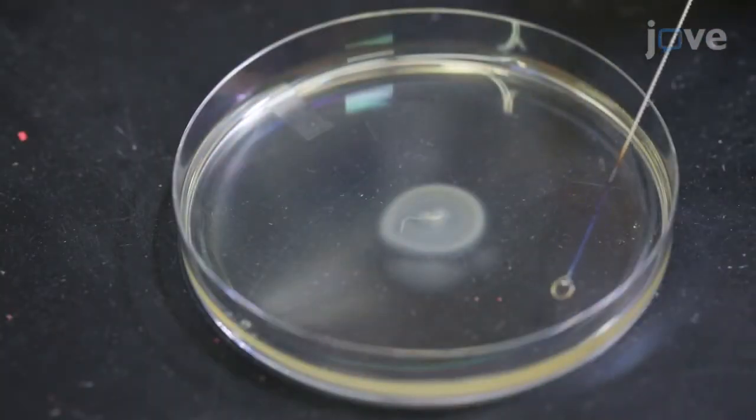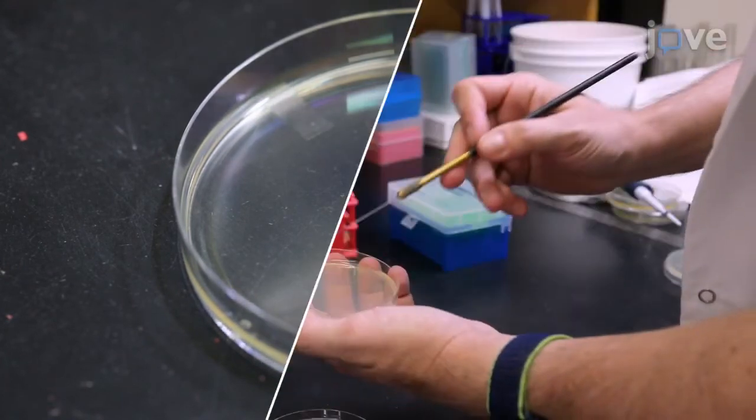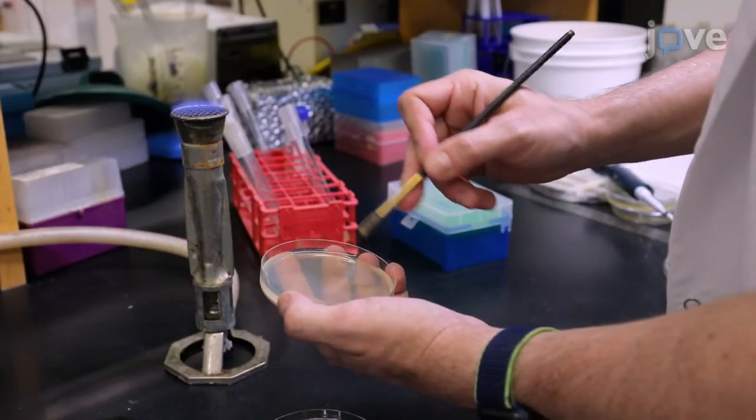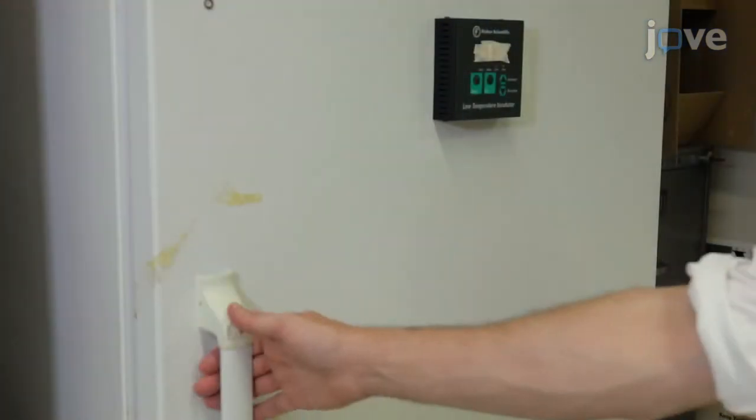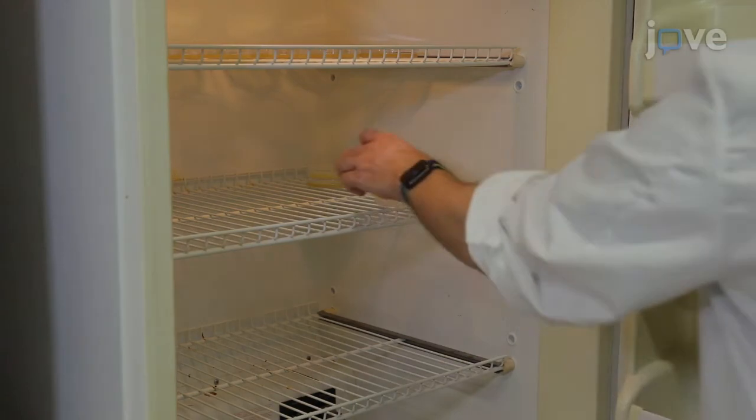Use a sterile wire loop to lift the cells from the flare region, and streak them onto an LB hard agar plate in order to purify single colonies. To confirm that the isolated suppressor mutants have restored motility, culture them on soft agar plates for strains of interest.